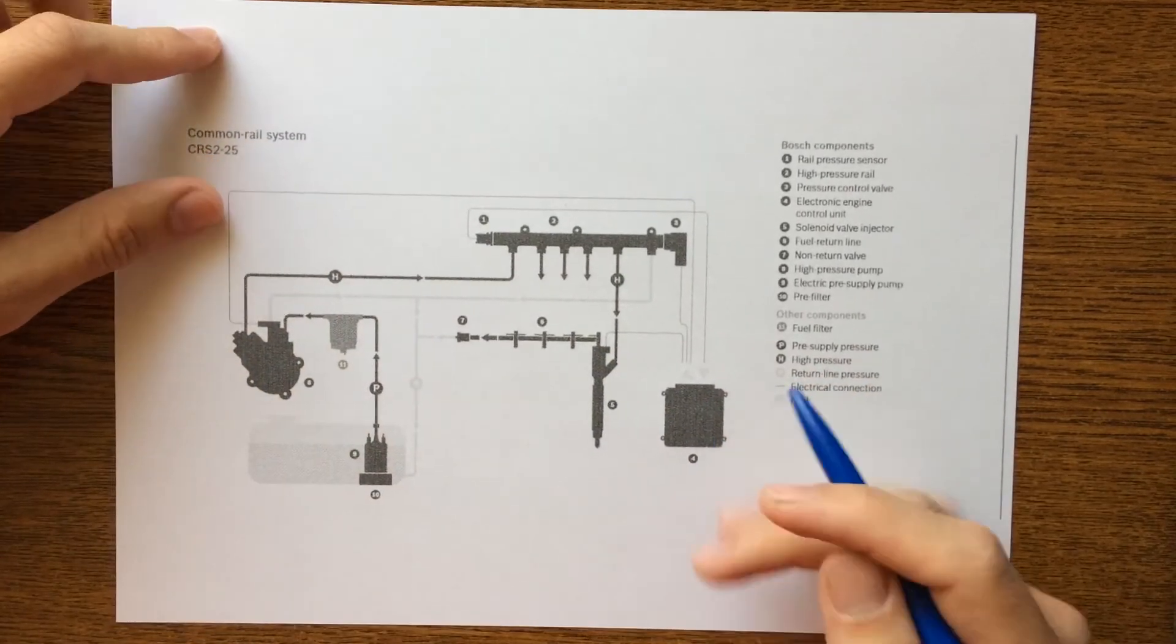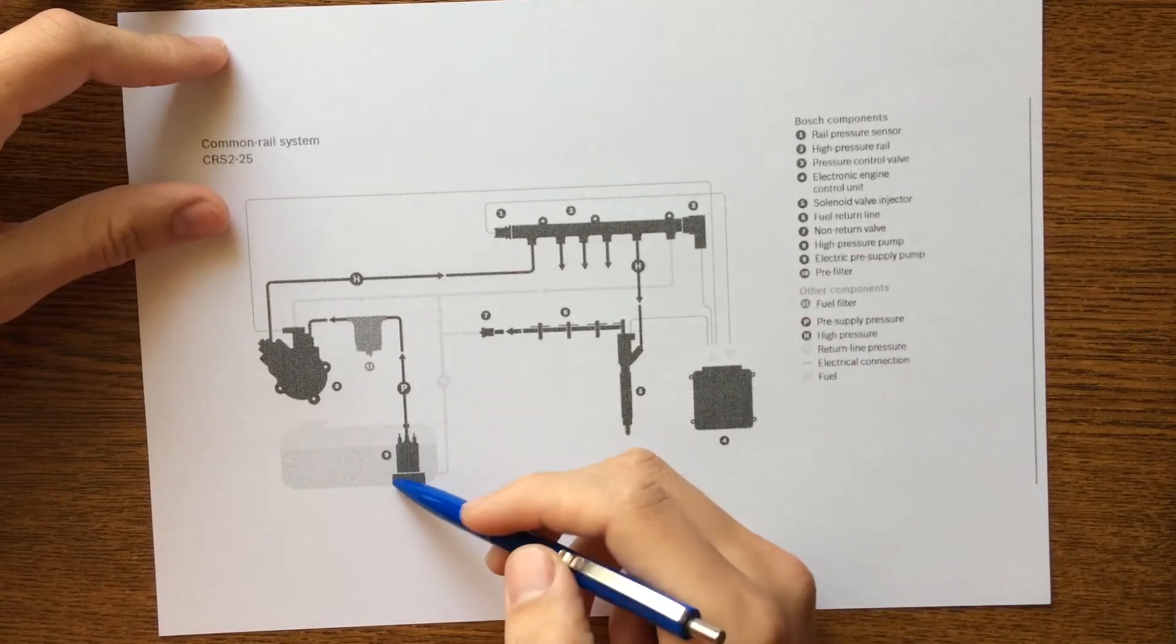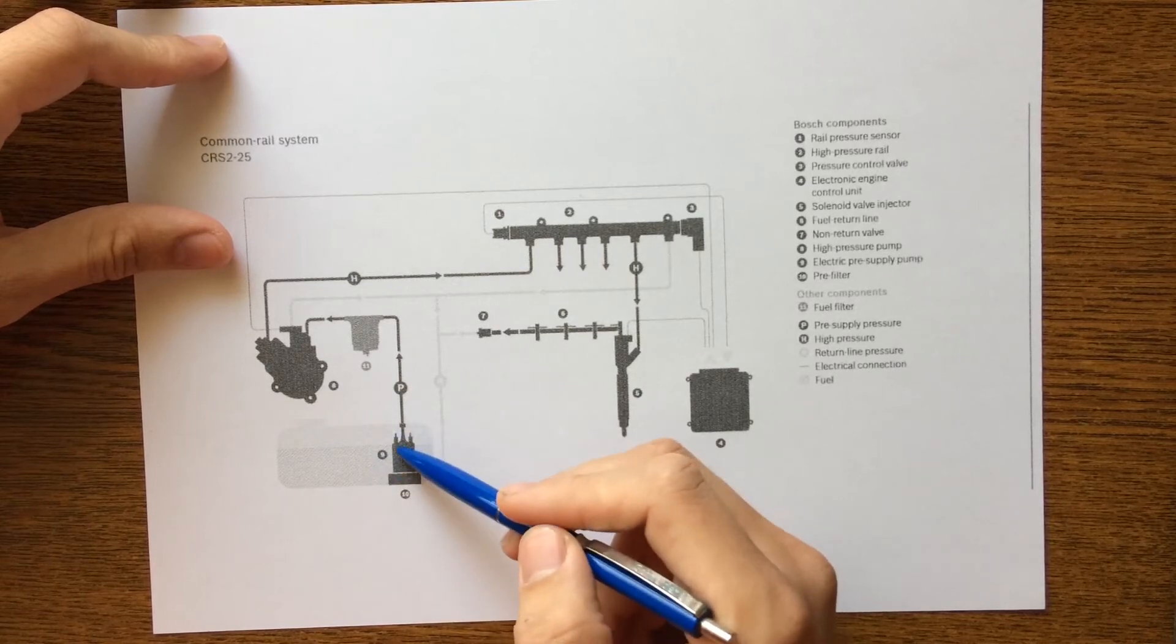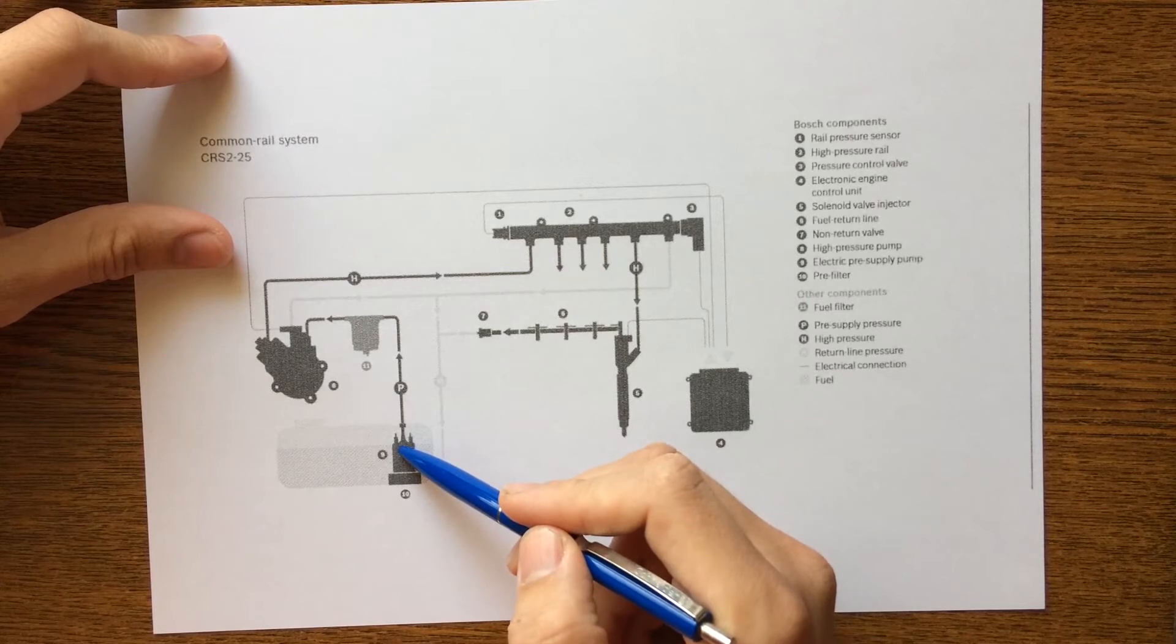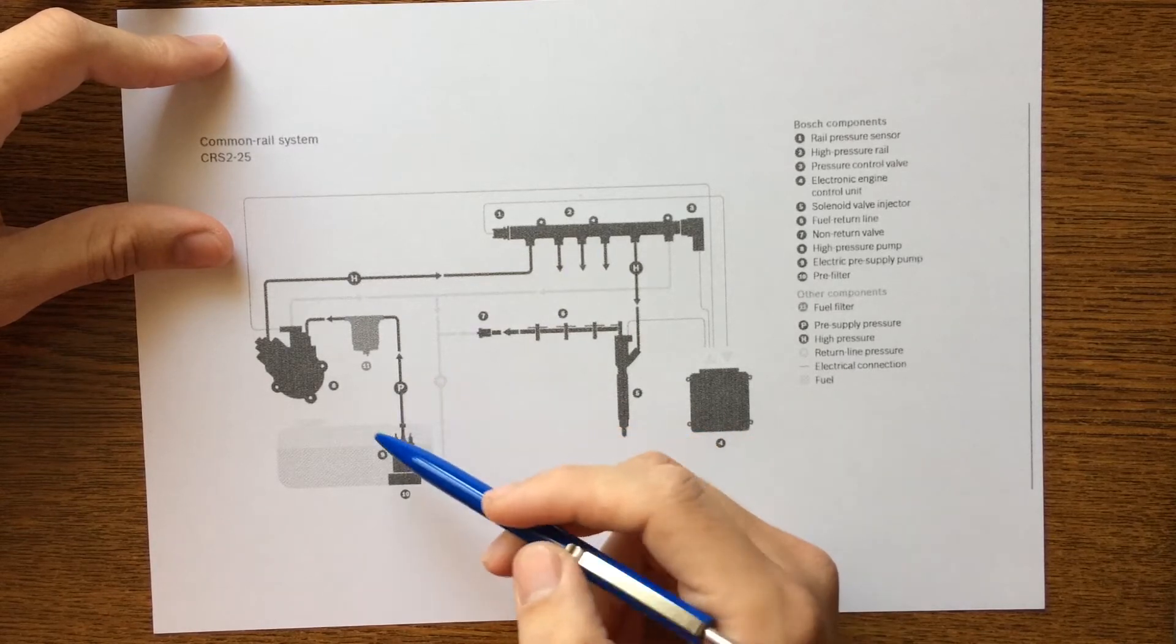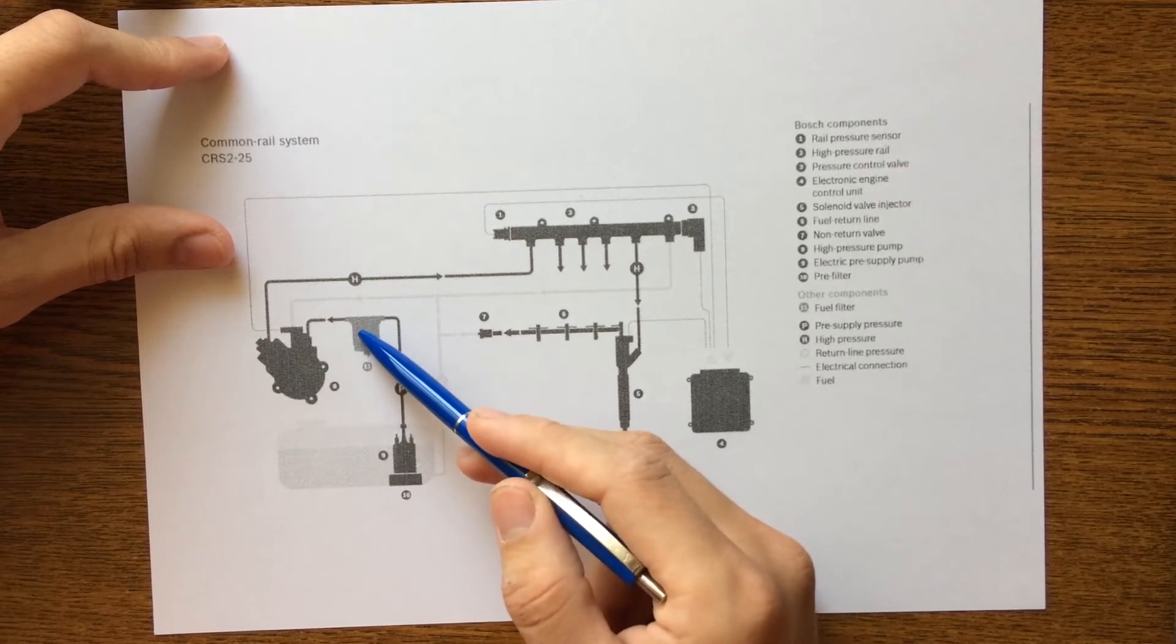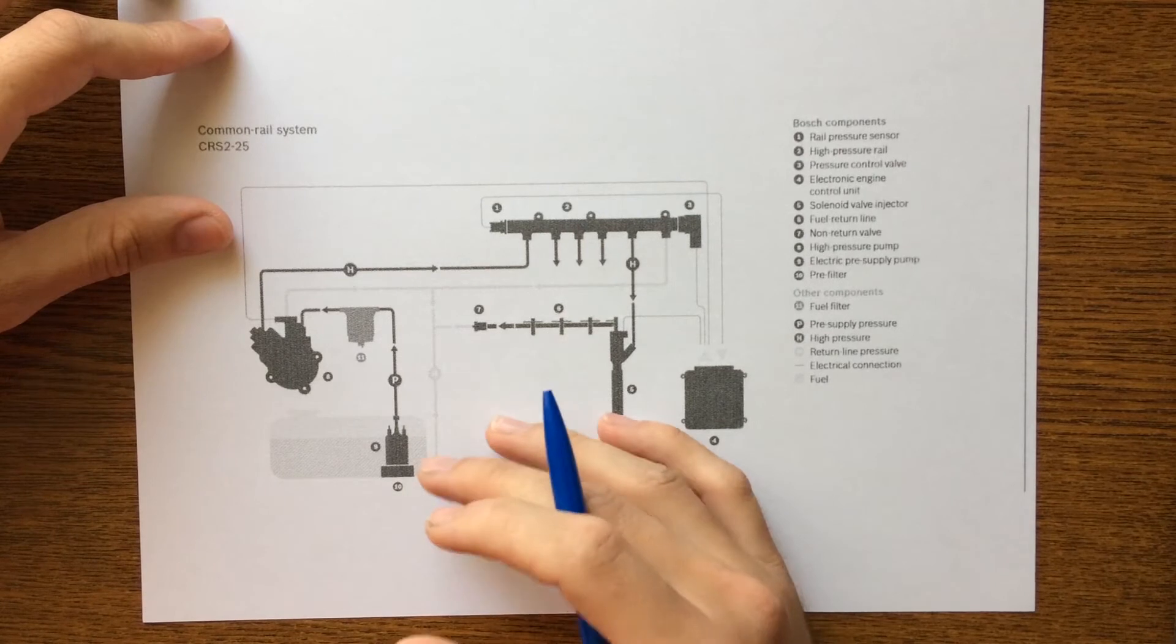So how everything is working and what the main components do. The fuel is pumped from the fuel tank with the help of an electronic pre-supply pump through a pre-filter and sent to the high pressure pump to the main fuel filter. The high pressure pump would be the first main component.